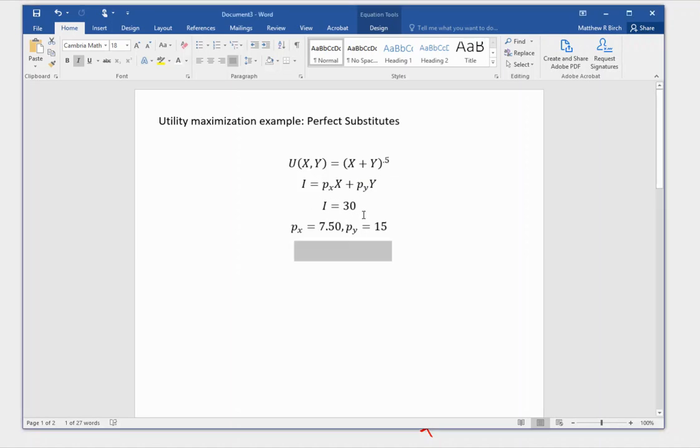Budget constraint. We got $30 to spend, but good x is cheaper than good y. Good x costs $7.50, good y costs $15.